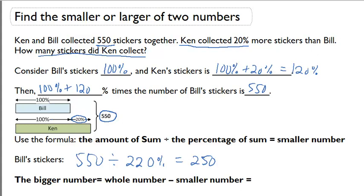Because remember, Bill collected less than Ken. So now we can figure out the bigger number. The bigger number has to be the total of 550 minus 250, and that has to equal 300. So we know that Ken collected 300 stickers.